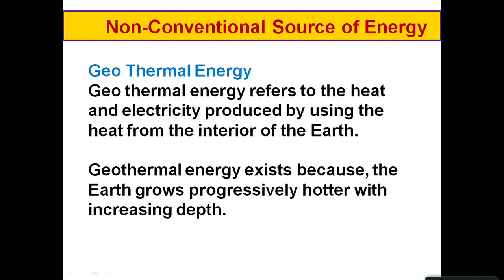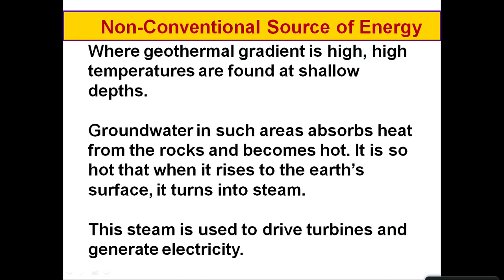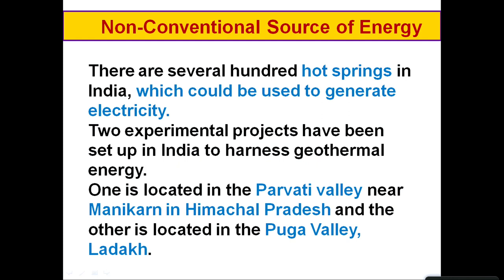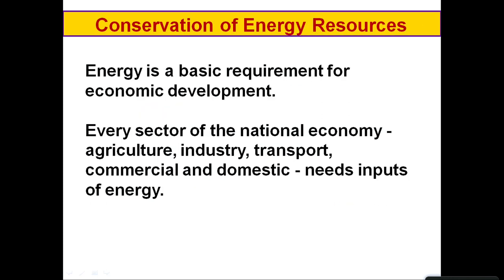Geothermal energy uses the heat from the earth, which grows progressively hotter with increasing depth. Groundwater in areas with high temperature gradients gets heated, and this heat is trapped as steam to turn turbines and generate electricity. The Parvati Valley at Manikaran in Himachal Pradesh and the Puga Valley in Ladakh are important experimental geothermal energy projects in India.